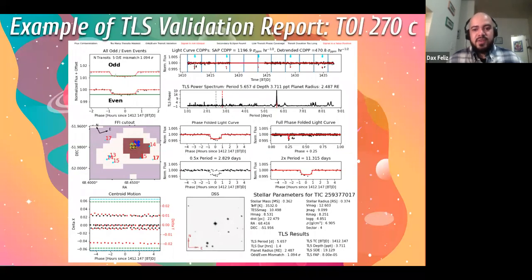So for each transit that we detect, we produce these validation reports. So again, I'm focusing on the TOI-270 system, where we detected the transits of TOI-270C. Here we conduct a number of different tests to visually inspect and vet against false positive scenarios. So in this upper left panel, we have something called the odd-even test, where we're looking at odd-number transits along with the even-number transits.